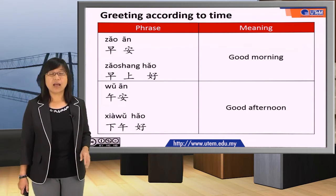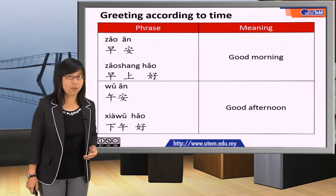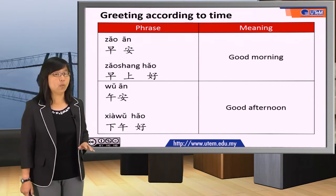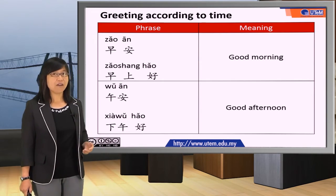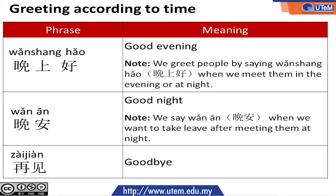早安, 早上好, which means good morning. 午安, 下午好, which means good afternoon. We greet people by using 晚上好 when we meet them in the evening or at night. And we say 晚安 when we want to leave after meeting them at night. Please repeat: 晚安 when we meet people in the evening, and 晚安 when we want to take leave after meeting them at night.